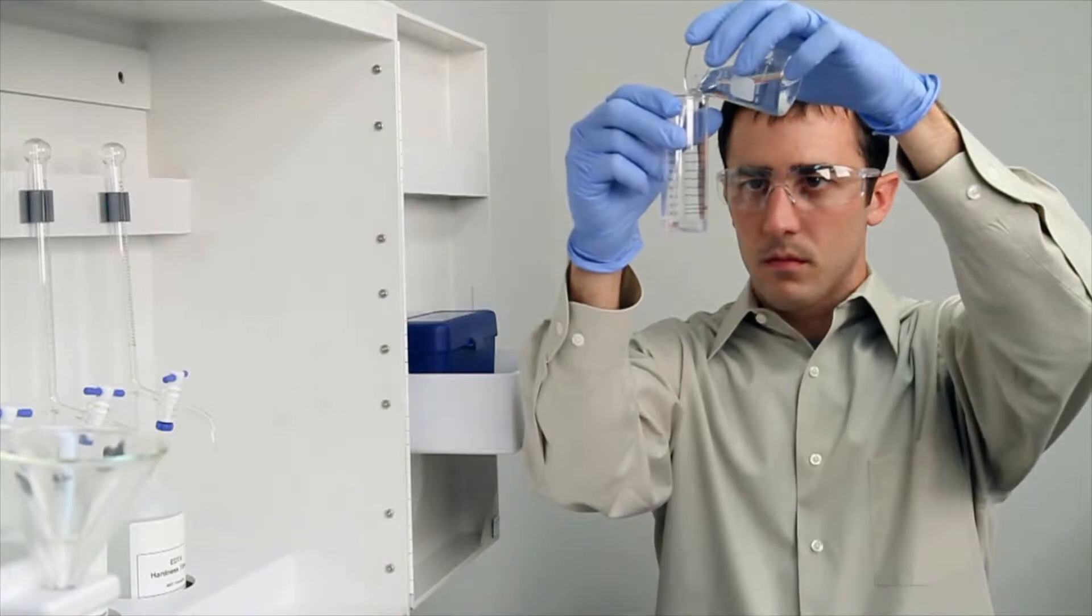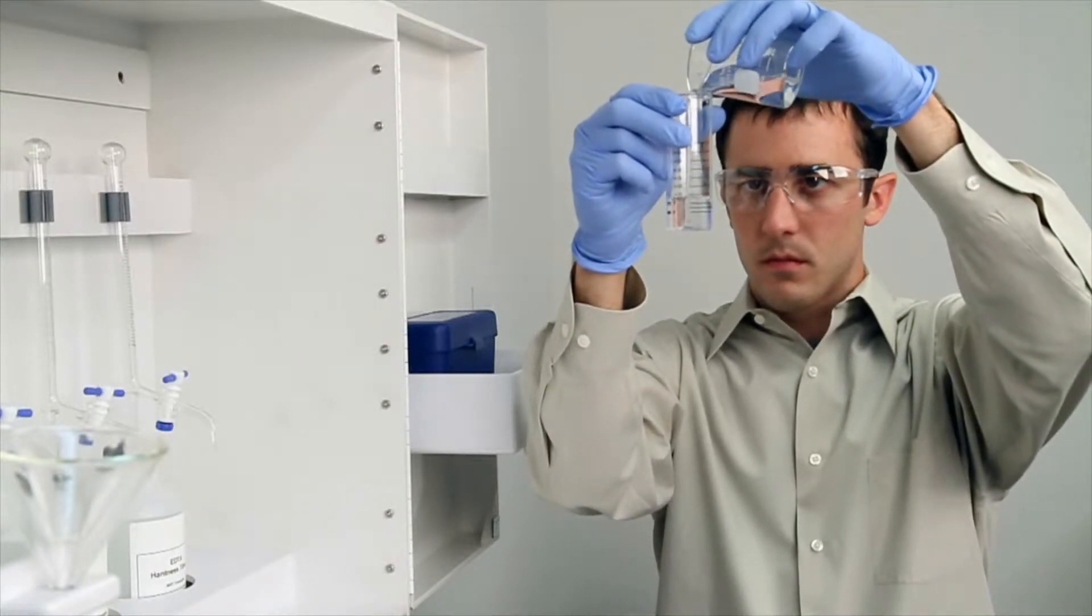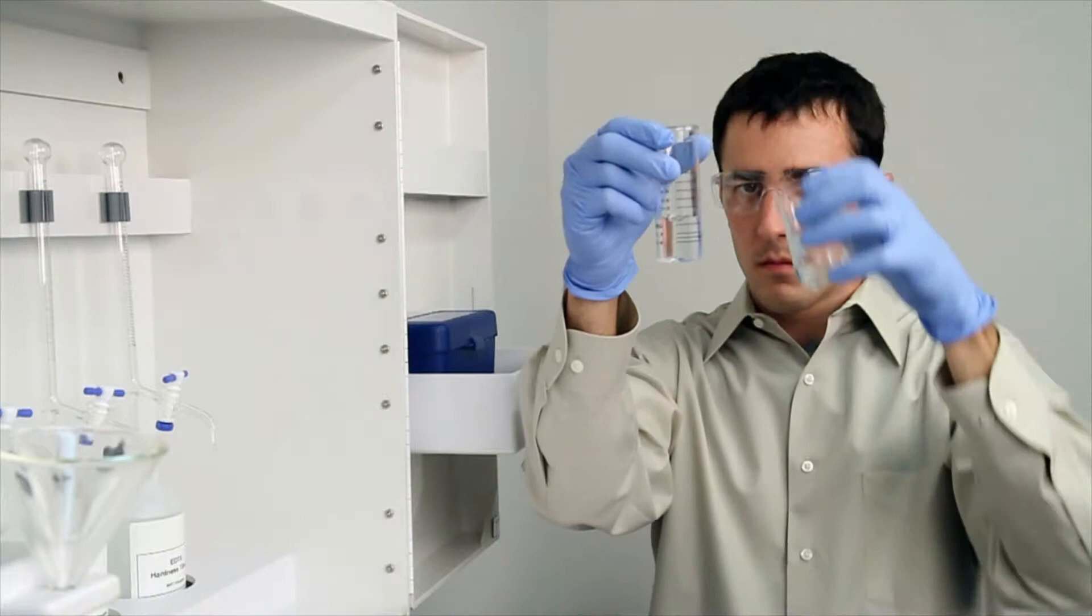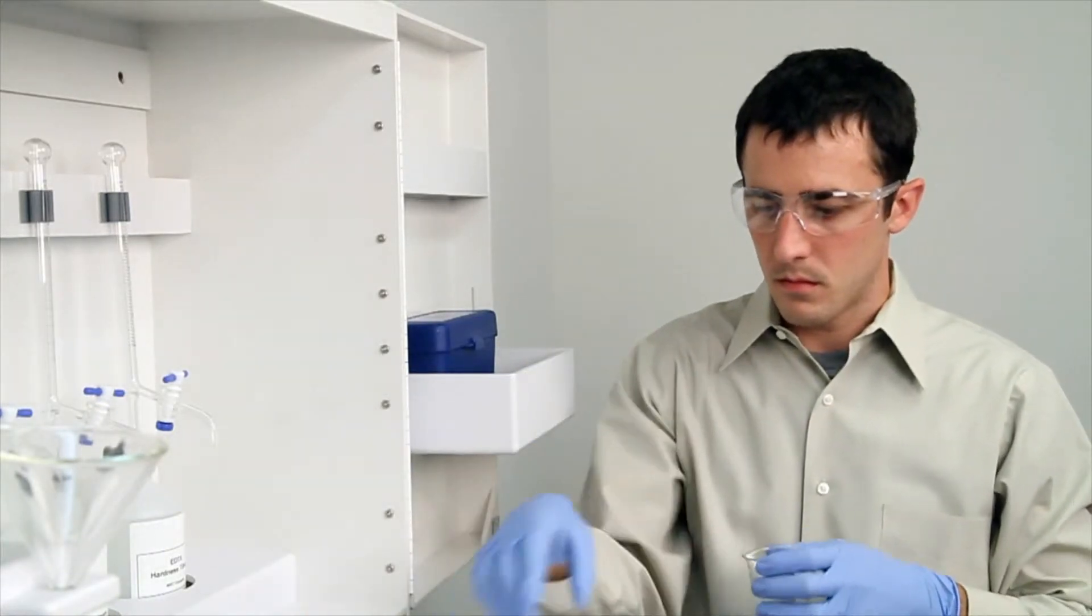To get an accurate sample size, you want to hold the vial close to eye level. Once you feel you have an accurate sample, place the vial on a level surface and bend down to eye level.